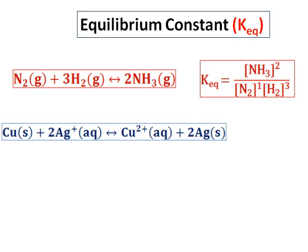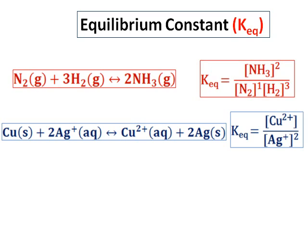Now consider the second reaction: copper solid reacts with 2 Ag⁺ aqueous to give you Cu²⁺ aqueous and 2 Ag solid. In this case, copper is a solid reactant and silver is also a solid product, so they will not appear in the K equilibrium equation. Therefore, K equilibrium is simply equal to [Cu²⁺] divided by [Ag⁺] raised to the power of 2. We do not include copper solid and silver solid.